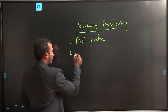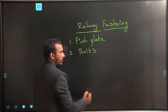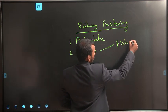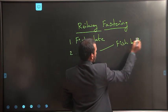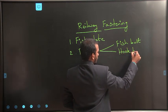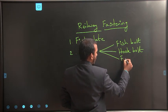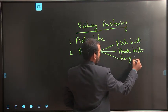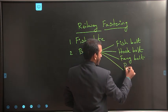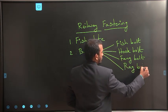The second one is bolts. There are four types of bolts available. The first one is fish bolt, and the second one is hook bolt. Third one is fang bolt. And the last one is rag bolt. These are the four types of bolts available.